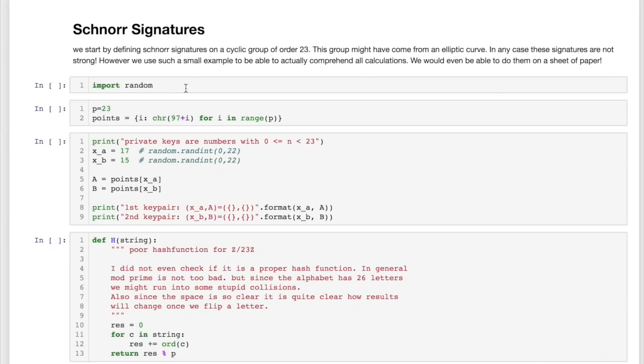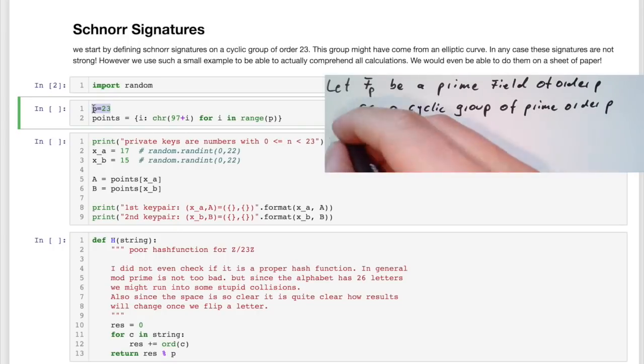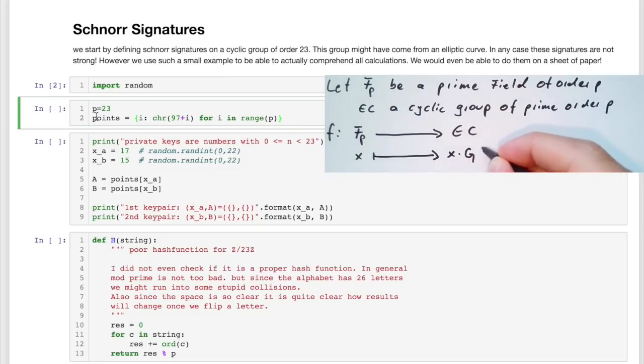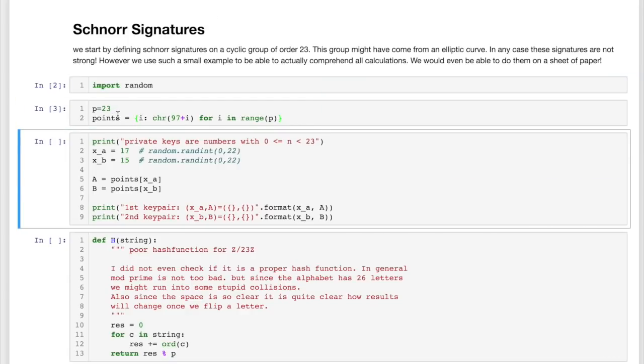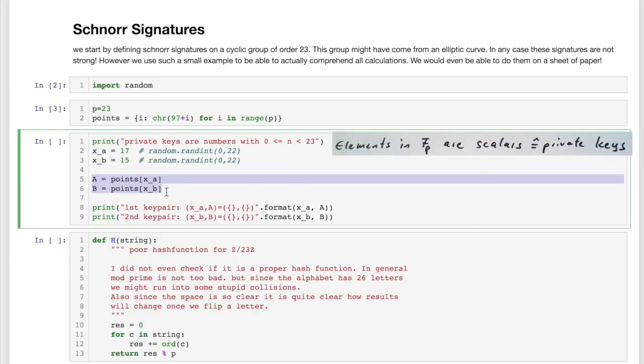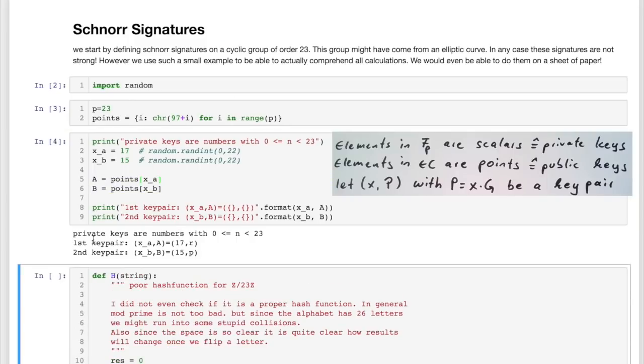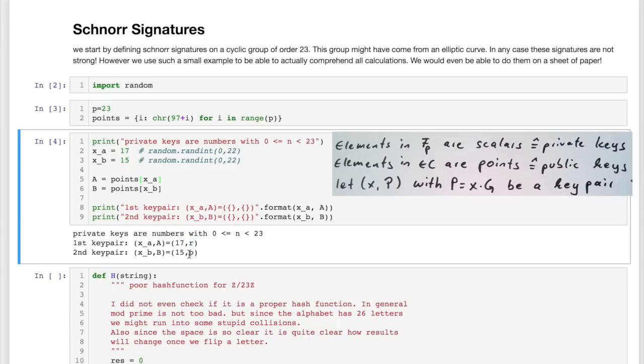So if you look at this notebook, I start by importing the random package, because later on I will need random numbers. Then I define p as 23. I already define my mapping. This is in our video what was called f, or multiplying with a generator point, which goes from scalars to points. For me, points will be just letters. So basically, 0 is going to be mapped to a, and b is mapped to 1, and so on and so forth. Now I'm selecting two private keys. Usually we should make them random. And I translate them to points, and I will just output both of them. So you see my first key pair is 17 with a public key r, and 15 with a public key p.